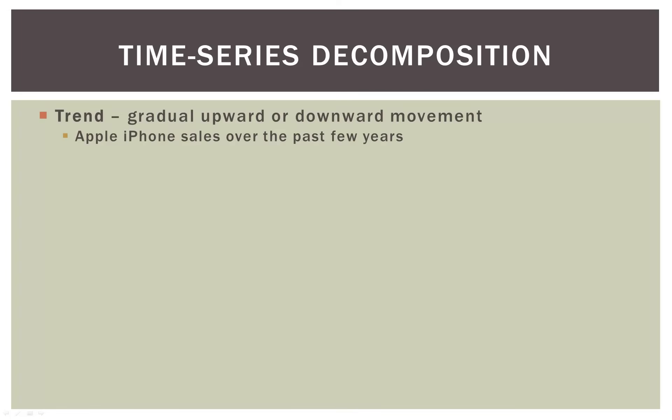The first kind is a trend, which is a gradual upward or downward movement in a data pattern. So if you remember our graph on the iPhone sales, the iPhone sales pattern or trend was definitely upward over the past few years, because the sales of iPhones has exploded over the past four or five years.